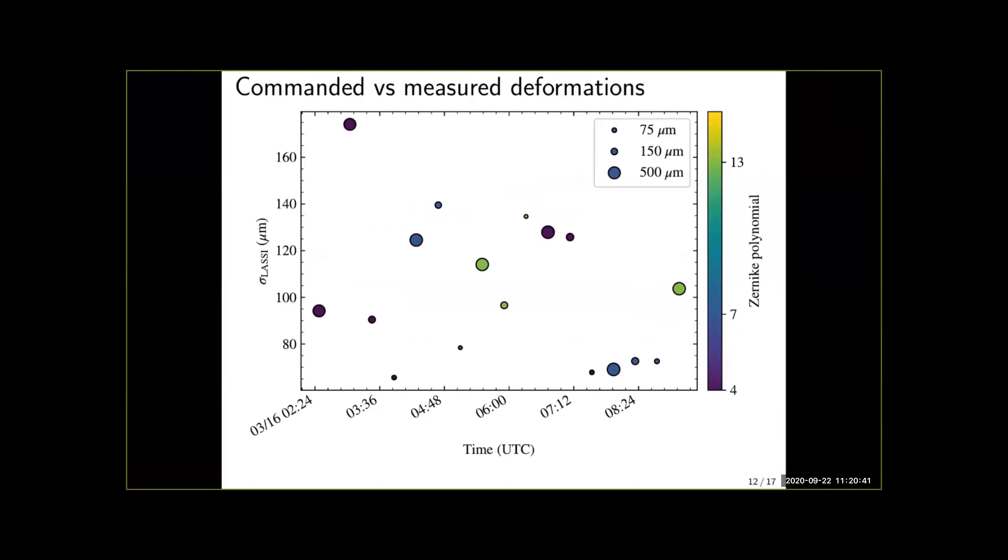What I'm showing here is again circles of different sizes and colors. The sizes and colors are the same as in the previous slide, but now on the x-axis what we have is time. So this shows that the deformations of the surface error introduced by the instrument does not change significantly over one night.